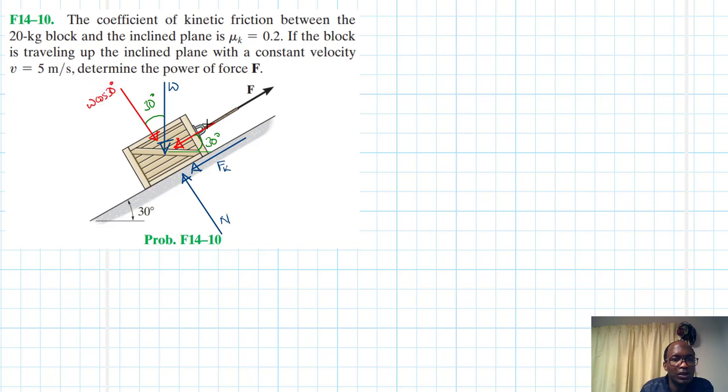And then this one is W sin 30. Okay, this is just equal to μk, kinetic coefficient, so μk. Let me write it properly, so this is Fk. It is just equal to μk times N, and this is equal to 0.2N like so.